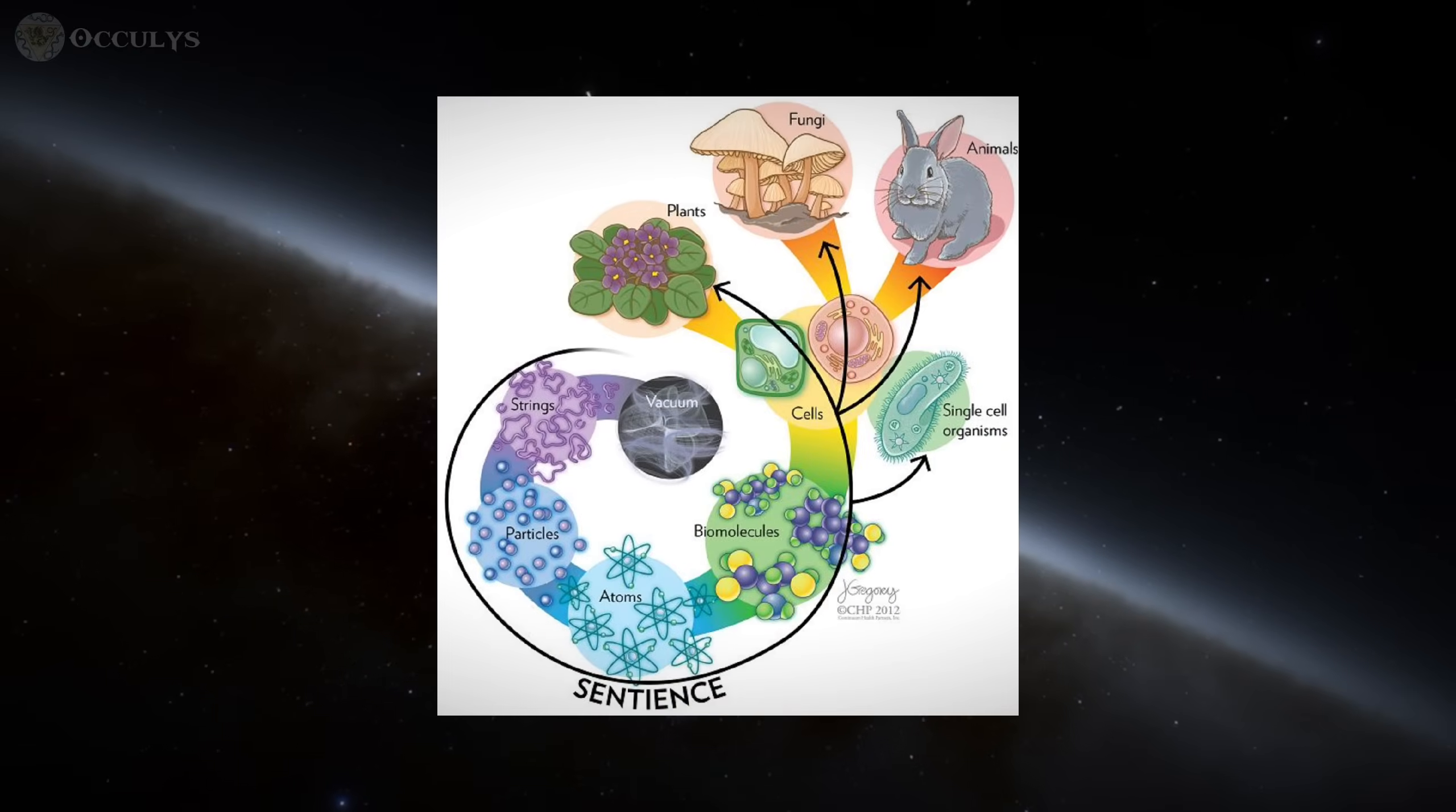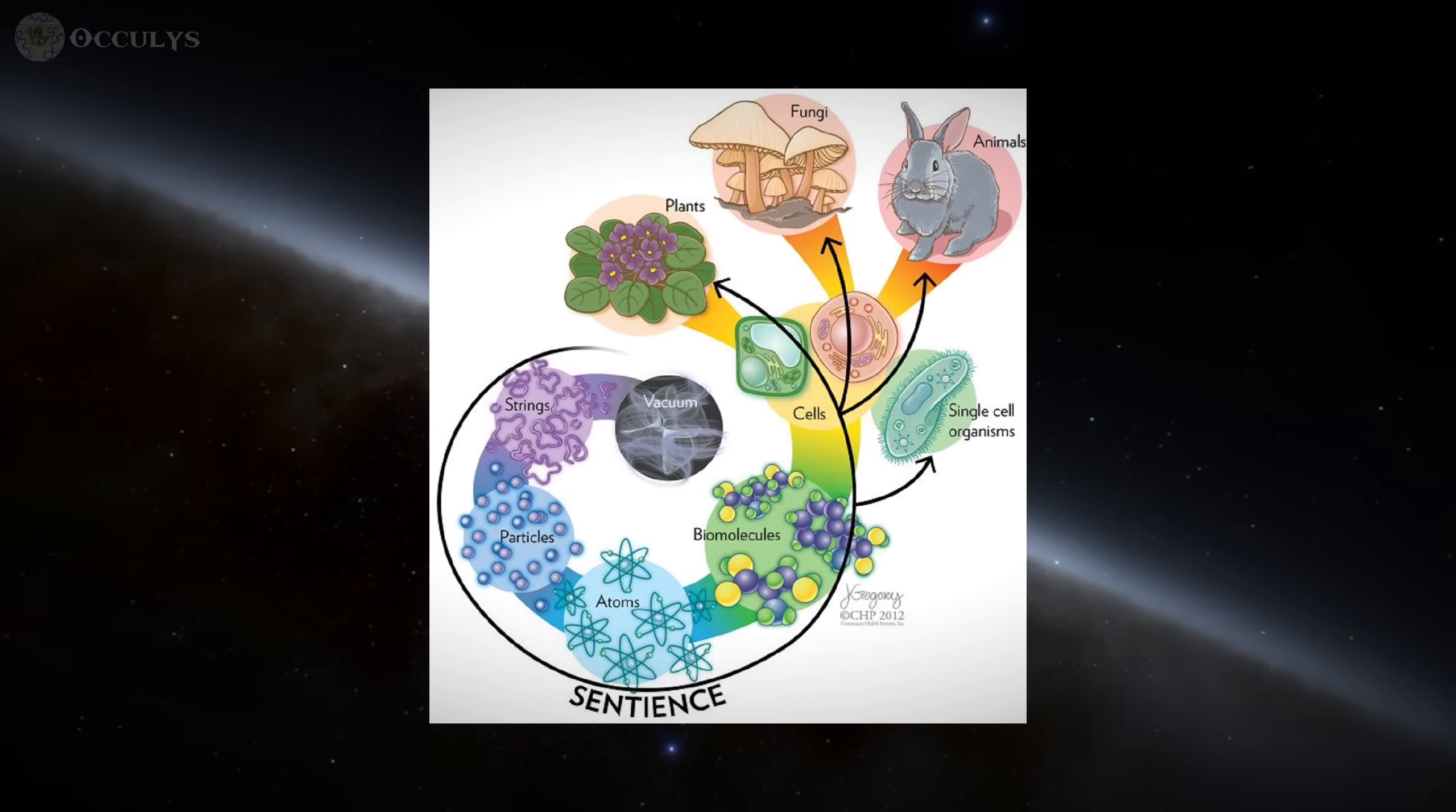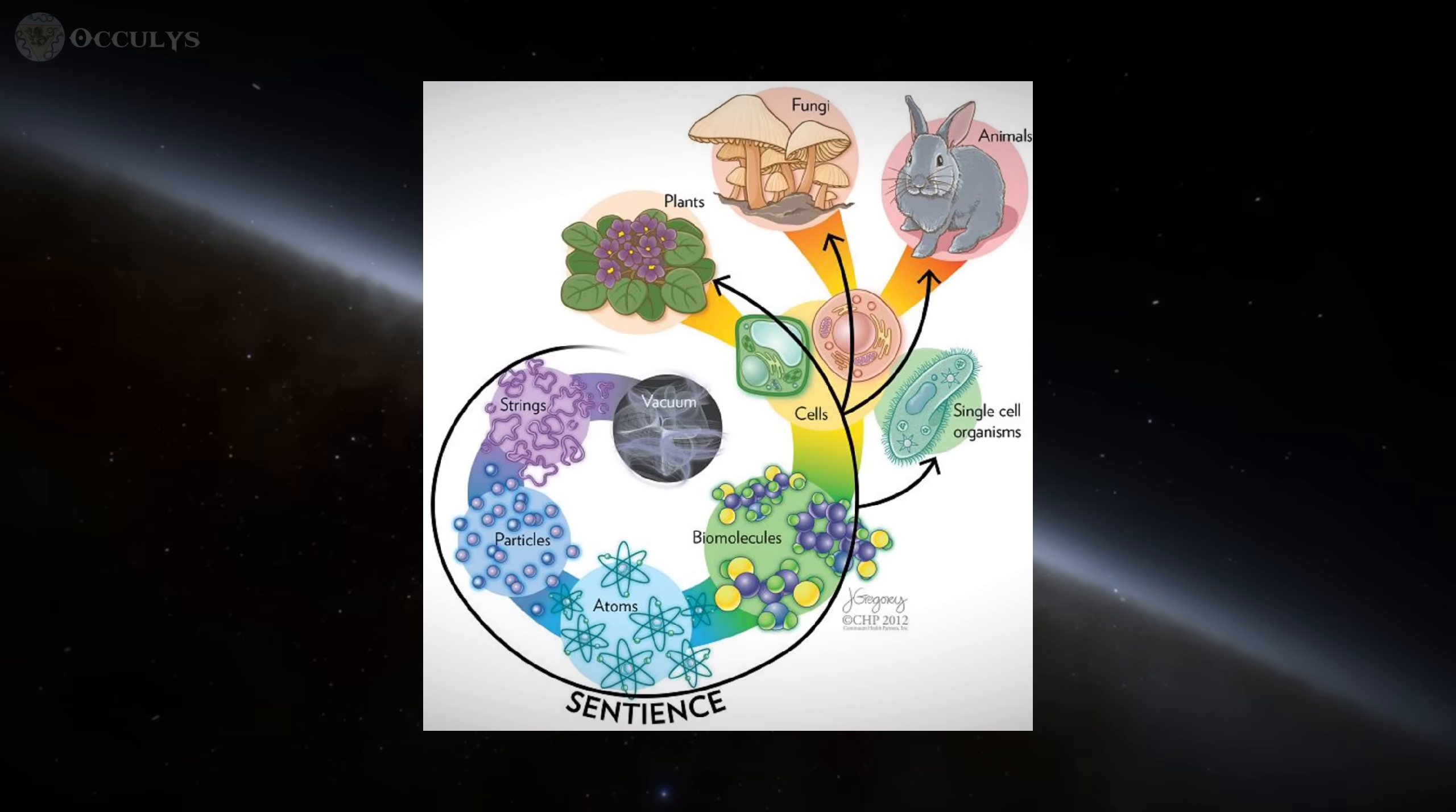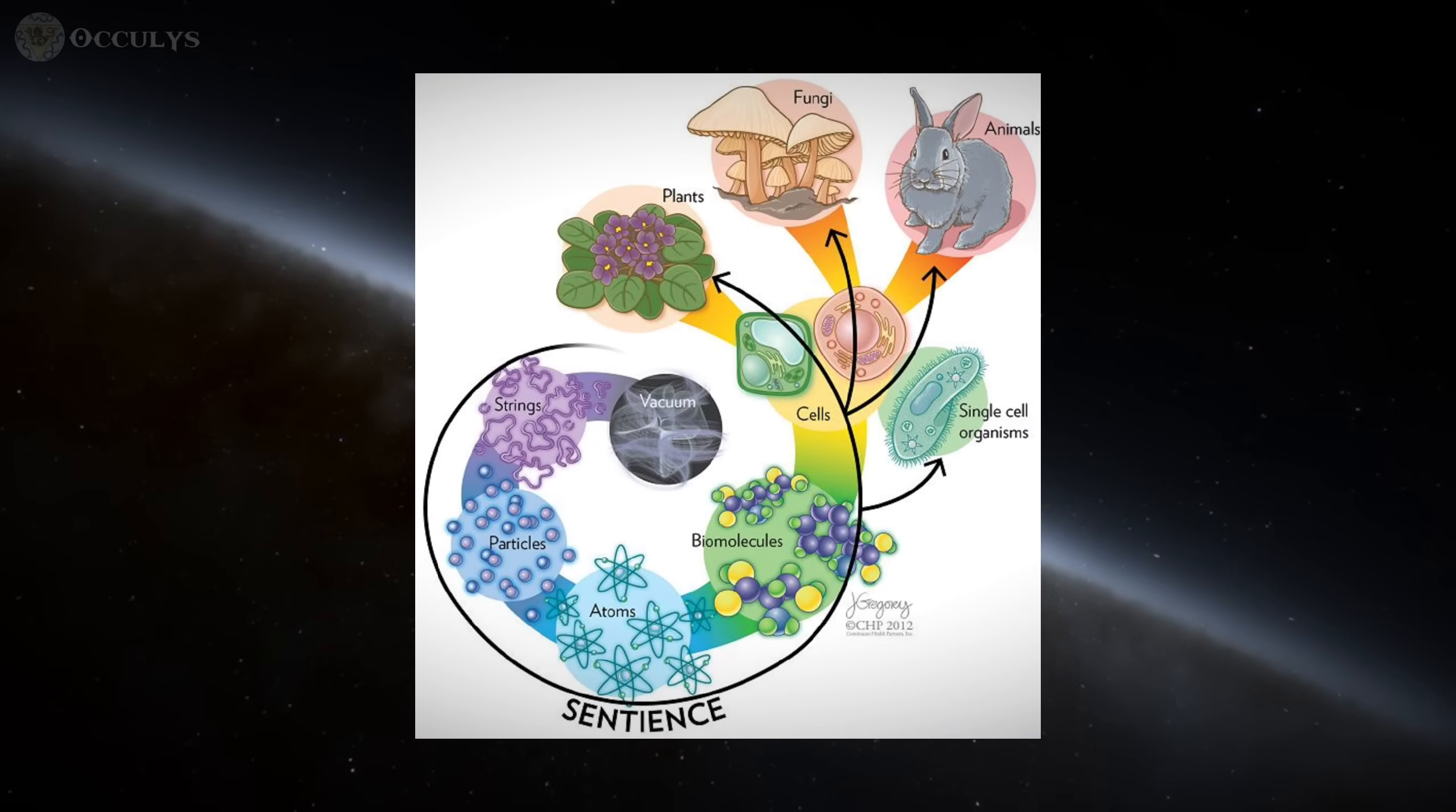For a system to possess a high phi value, it must contain a large amount of differentiated information that is simultaneously unified to an irreducible whole. This framework is not restricted to brains. According to IIT, any system with a non-zero phi value, including potentially a thermostat, an atom, or a proton, would possess a corresponding degree of experience. This provides a direct mathematical pathway to a version of panpsychism.